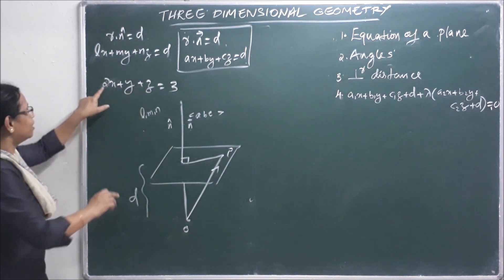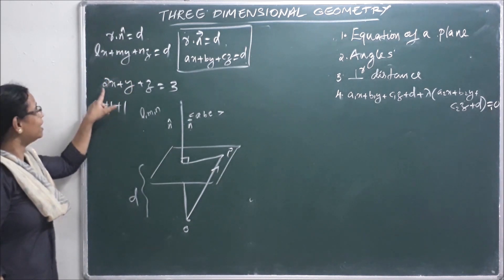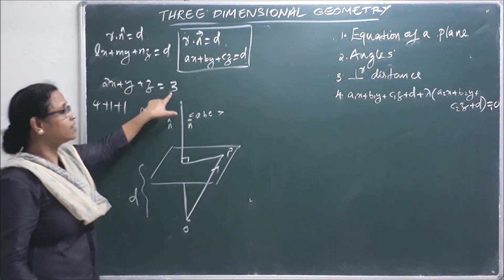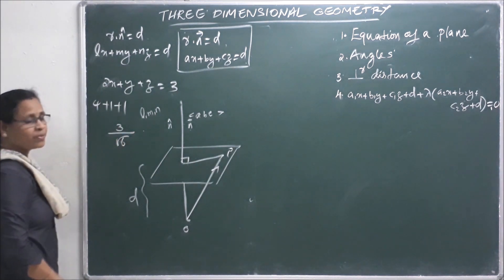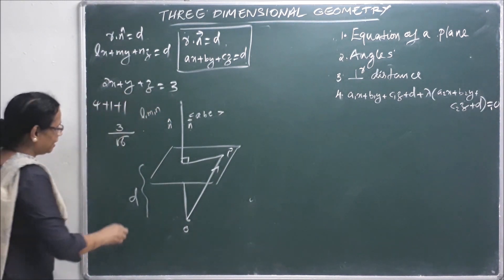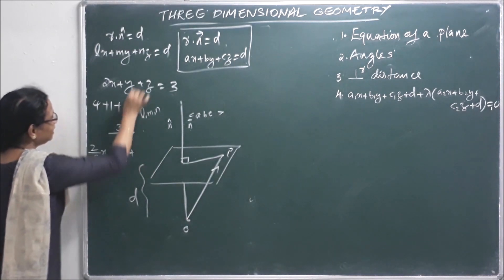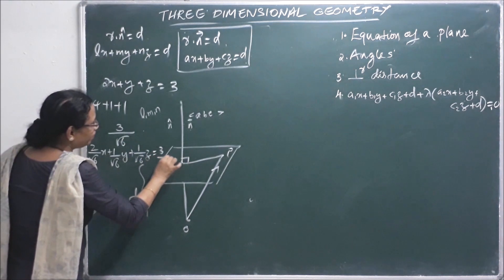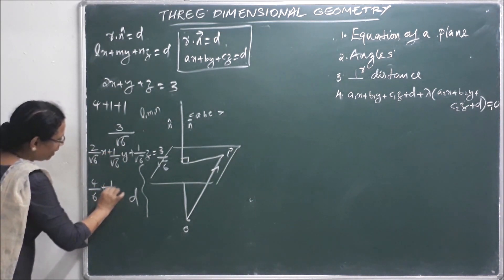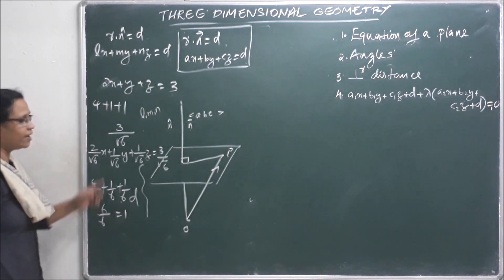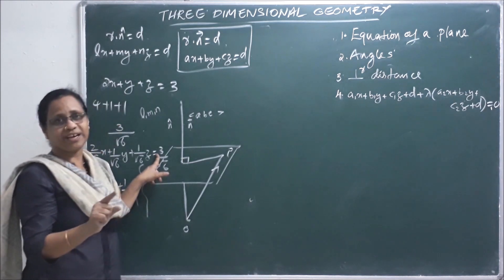So A squared is 4, B squared is 1, C squared is 1, giving a sum of 6. Therefore the direction cosines L, M, N are root(4/6), root(1/6), root(1/6), and 6/6 equals 1. This gives us LMN, the direction cosines of the normal to the plane.